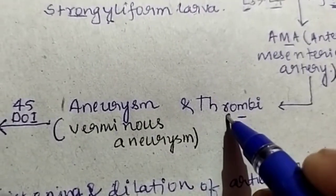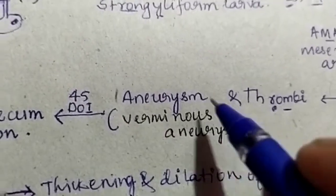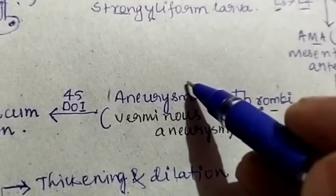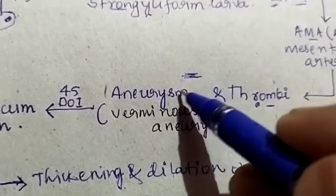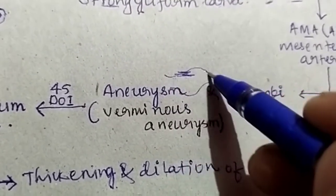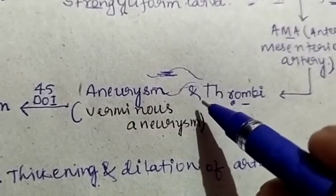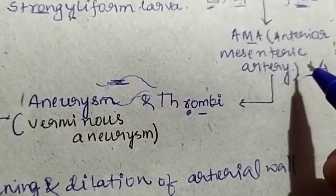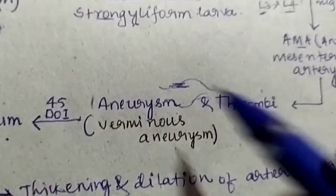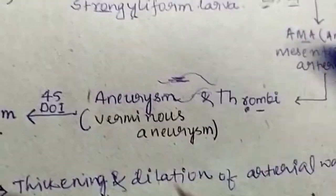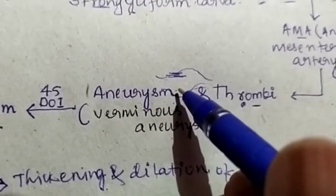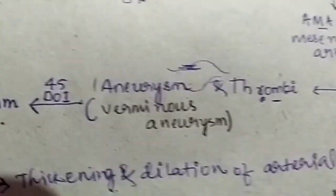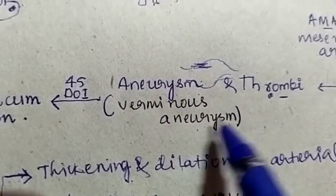Large numbers of L4 larvae inside the anterior mesenteric artery lead to the formation of thrombi and aneurysm. Aneurysm is the condition in which thickening and dilation of the arteries happen because of irritation produced by these larvae. This is a verminous aneurysm.